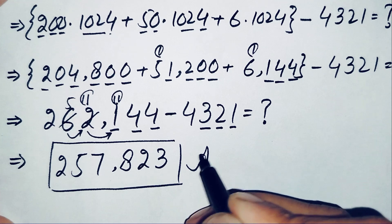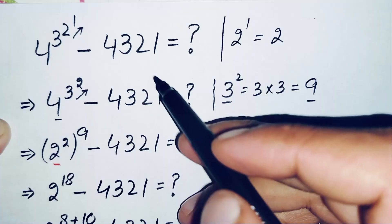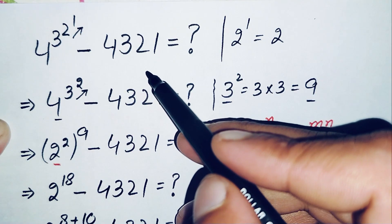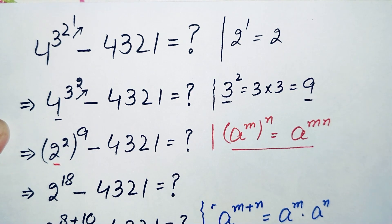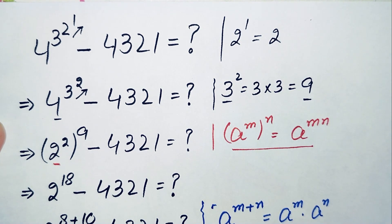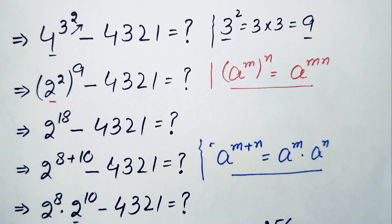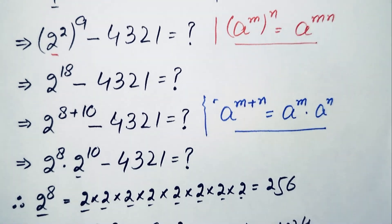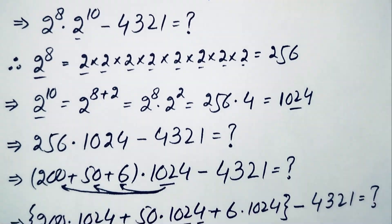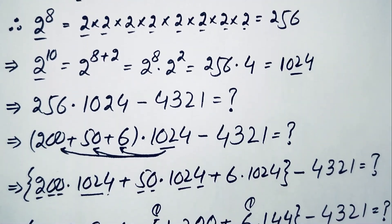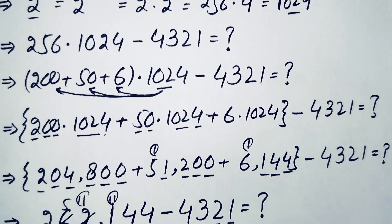So finally, 257,823 is our answer and the value of this interesting simplification math problem. If you liked this video, don't forget to subscribe to my YouTube channel for more interesting math videos. Thanks for watching — see you in the next video, bye bye!